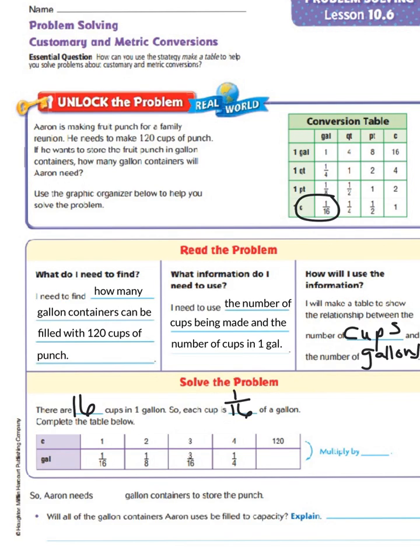So, across the top, we have our cups. And across the bottom, we have our gallons. So, for one cup, that is one-sixteenth of a gallon. Two cups is one-eighth or two-sixteenths of a gallon. Two-sixteenths being simplified down to one-eighth. Three cups is three-sixteenths of a gallon. Four cups is four-sixteenths or that is simplified to one-fourth.